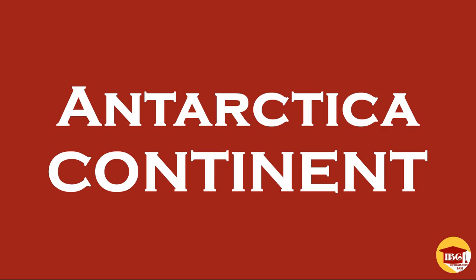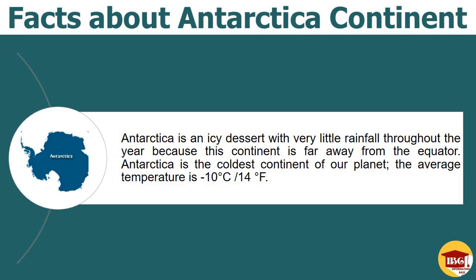The continent of Antarctica was the seventh continent in the world. Antarctica is an icy desert with very little rainfall throughout the year because this continent is far away from the equator. Antarctica is the coldest continent of our planet; the average temperature is minus 10 degrees Celsius, 14 degrees Fahrenheit.